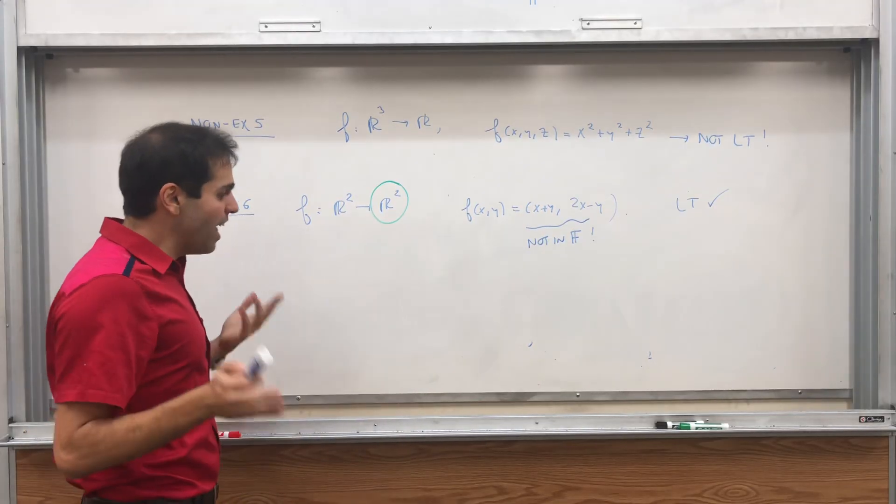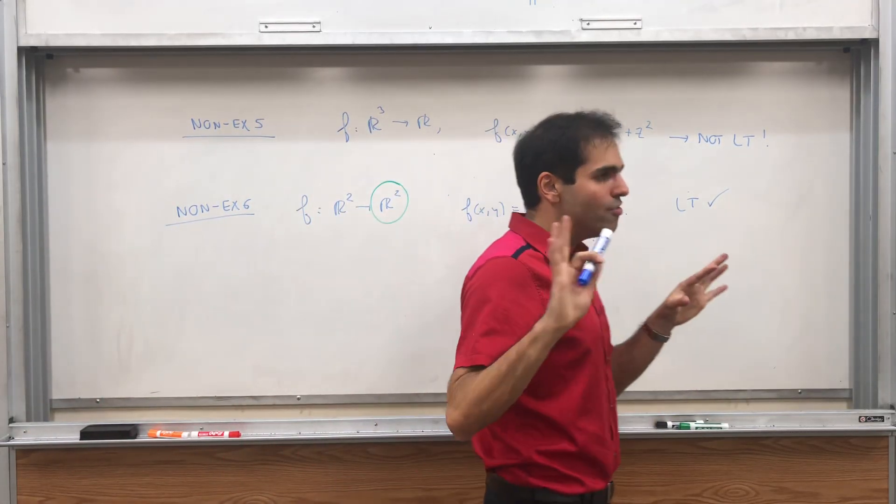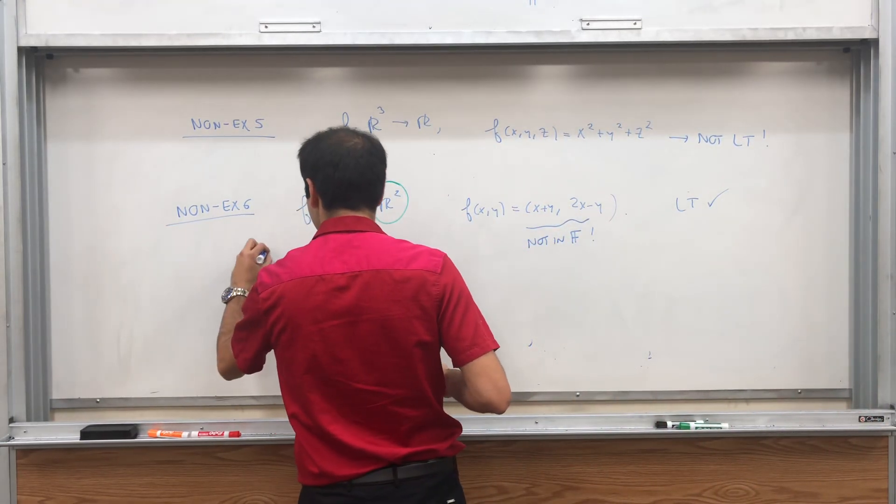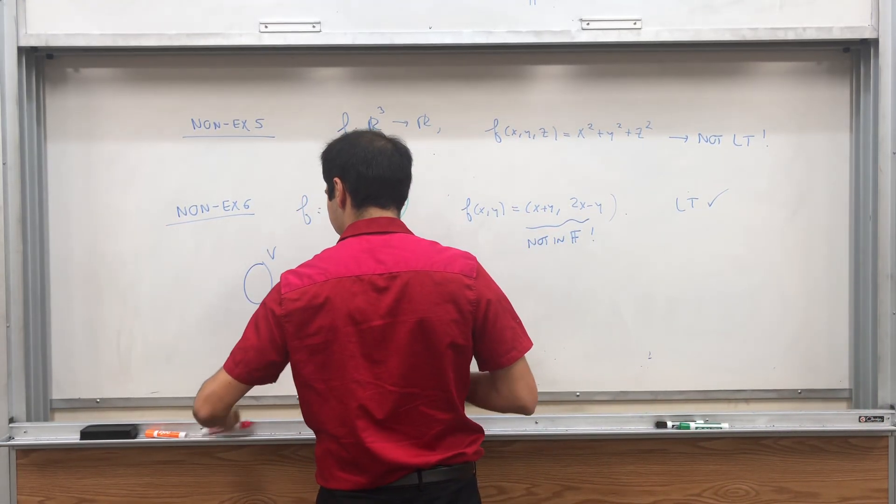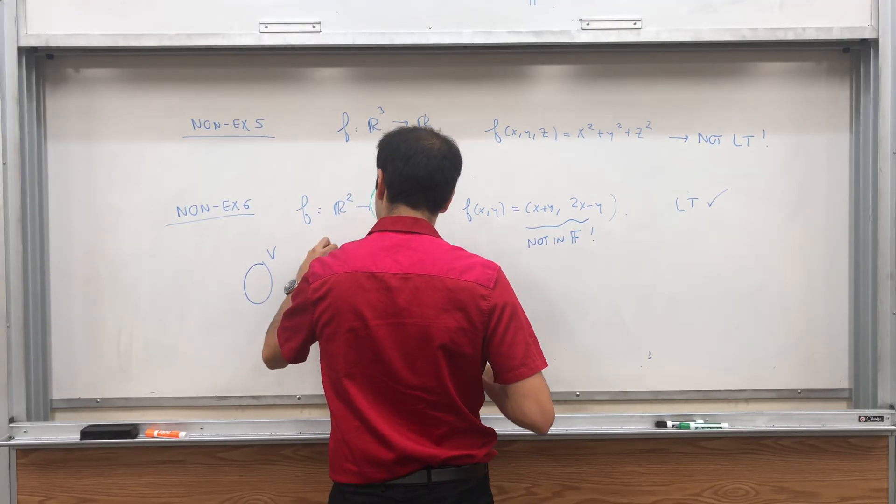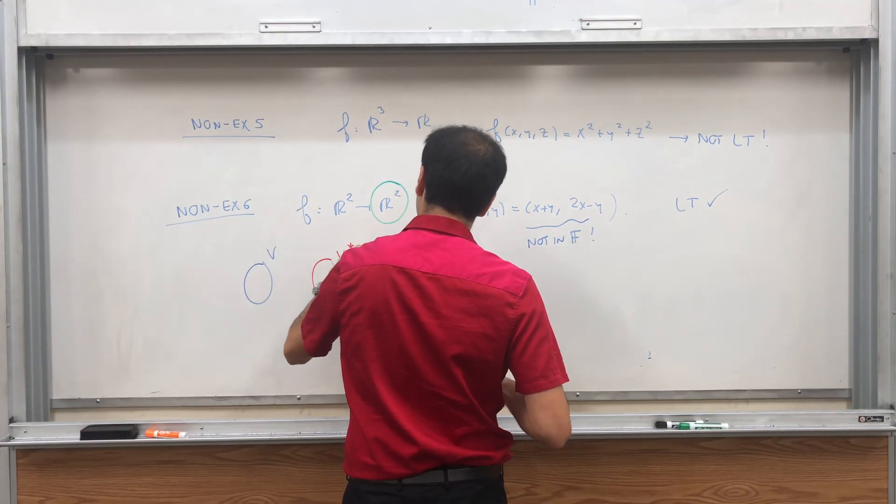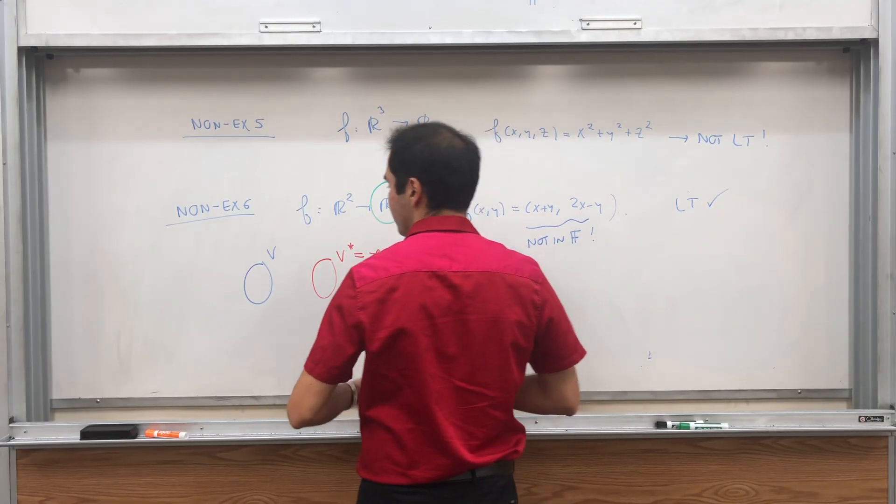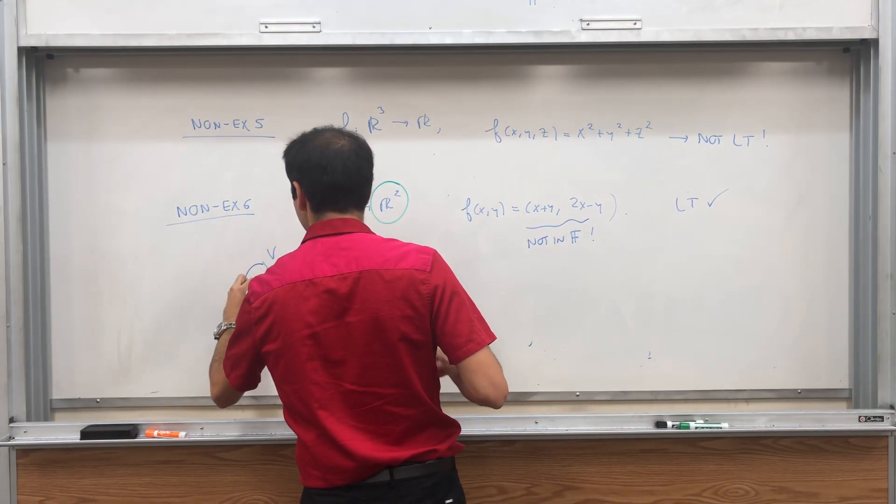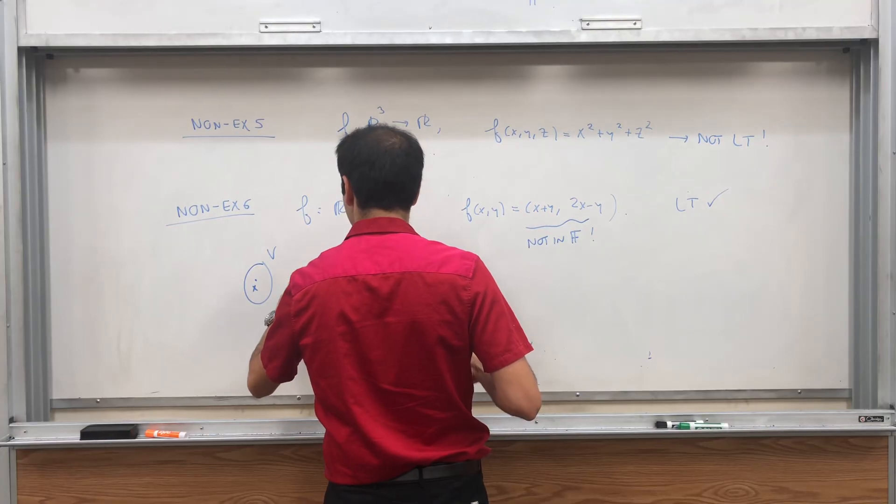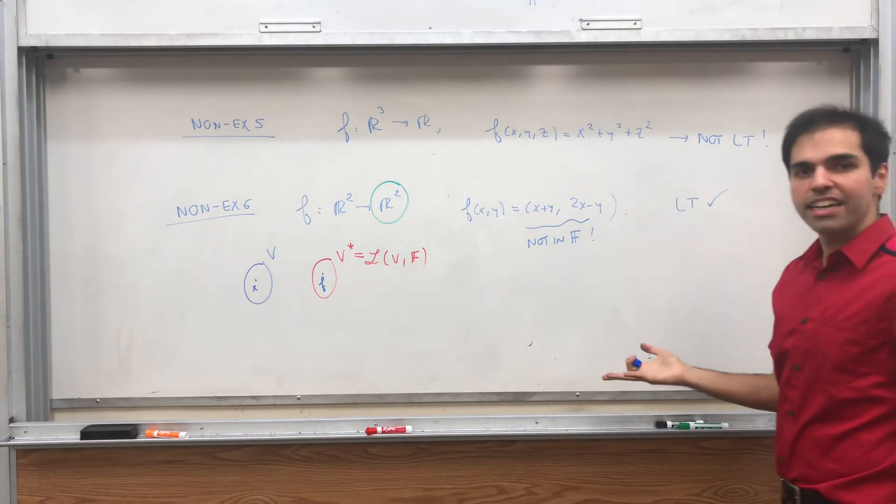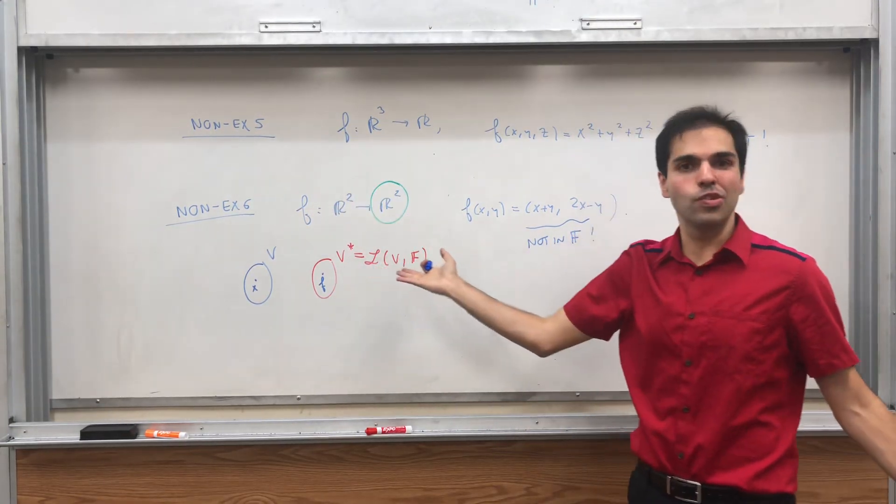Now, why am I claiming that V star is like a shadow space of V? So we have V, and then we have V star, which is L of V, F. So the point is, vectors in V here are vectors, vectors in V star, they're linear functionals. It turns out, at least in finite dimensions, they are isomorphic. So there's a very easy way to going from V to V star.